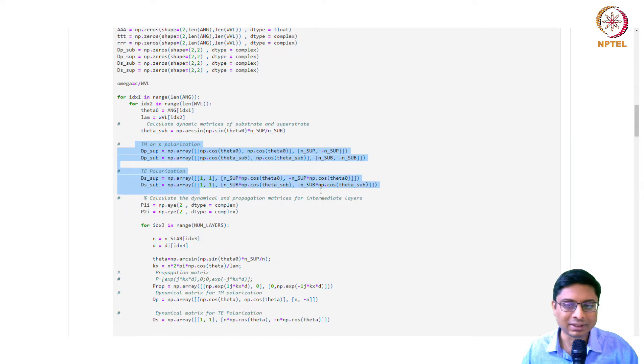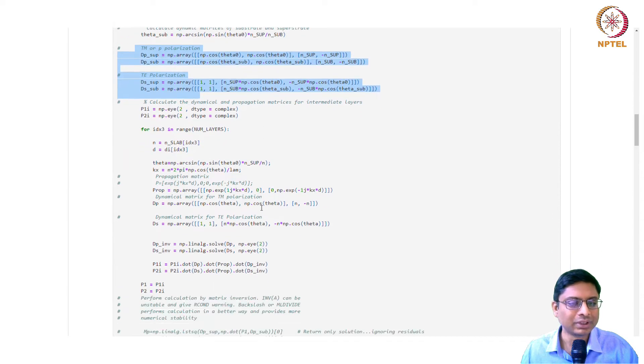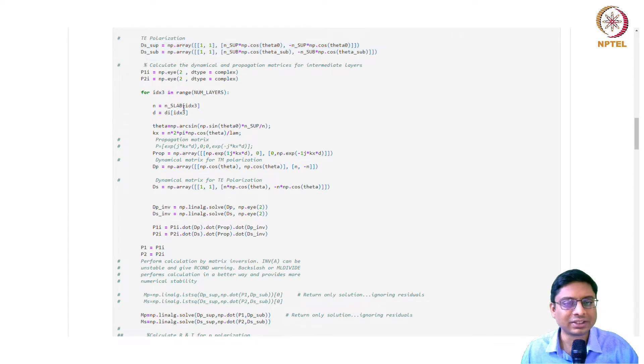There are basic matrices that we define for substrate and superstrate, ds matrices for p and s polarization. These definitions are in the textbook. The same idea like the matrices we define for the layers follows. You just start with the first layer and keep computing over the number of layers. One key point is the dynamical matrices, the propagation matrix.